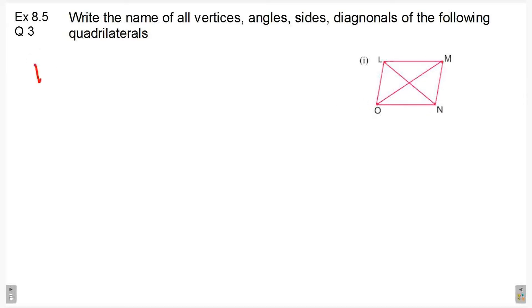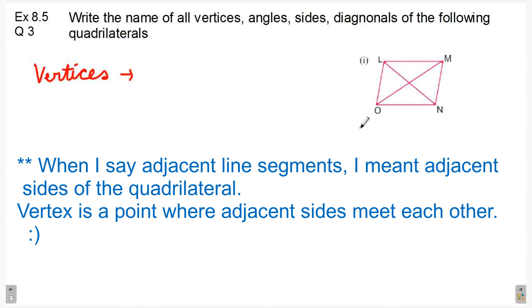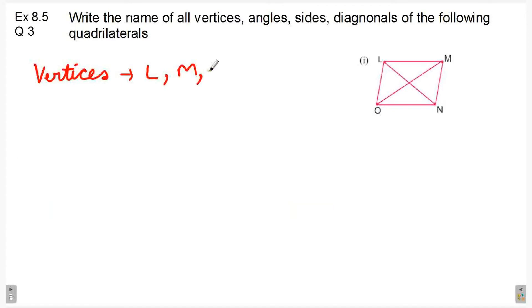Now, let's first write the name of the vertices. So, vertices are the 4 points which are adjacent line segments, which are the 4 points. So, L M N O.